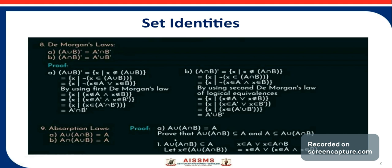Now consider the first absorption law: A union (A intersection B). To prove this, we need to show that A union (A intersection B) is a subset of A, and A is a subset of A union (A intersection B).